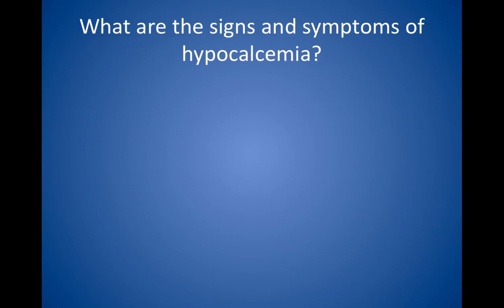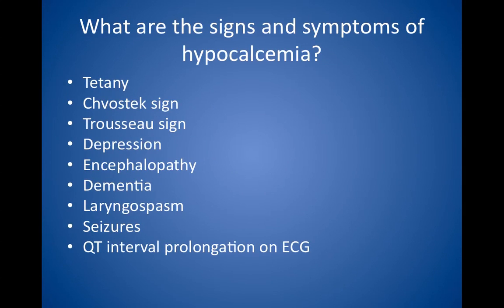What are the signs and symptoms of hypocalcemia? Hypocalcemia produces neurologic findings, the most commonly tested of which is tetany. Tapping on the facial nerve at the angle of the jaw elicits contraction of the facial muscles, and is called Chvostek's sign. Inflation of a tourniquet or blood pressure cuff elicits hand muscle carpopedal spasms, which is called Trousseau's sign. Other signs and symptoms are depression, encephalopathy, dementia, laryngospasm, and convulsions or seizures. The classic EKG finding is QT interval prolongation.